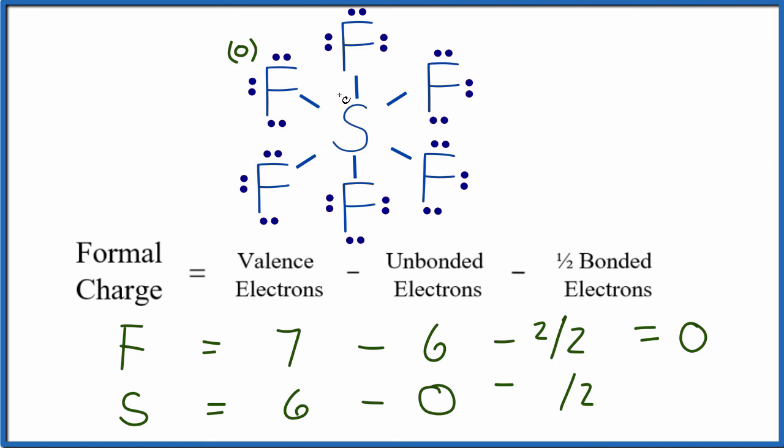Then we're going to take half of the bonded electrons. We have two, four, six, eight, ten, twelve. Twelve total bonded valence electrons, and that should equal six minus six is zero. So the formal charge on the sulfur in the center,